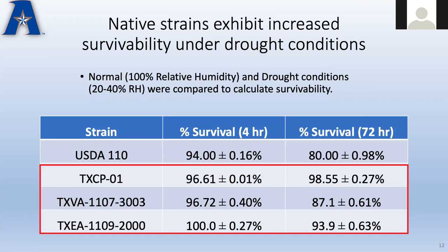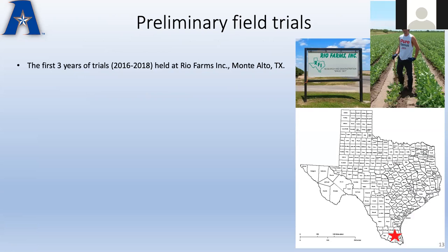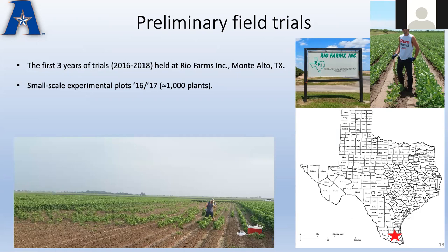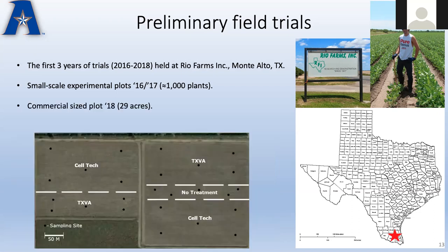To figure this out, we did a lot of preliminary field trials. The first three years of field trials occurred from 2016 to 2018 at Rio Farms Inc. in Monte Alto, Texas — way down in the tip of Texas, right across the border from Mexico, one of the southernmost soybean fields in the nation. This research was started by a previous grad student in my lab, Dr. Dylan Parks, who is now a professor here at the University. The first two years we did small-scale experimental plots — hand planted, hand sampled, and hand harvested — about a thousand plants per plot, just to see if it works in the lab and whether it creates a better yield in the field.